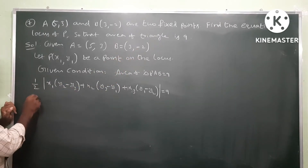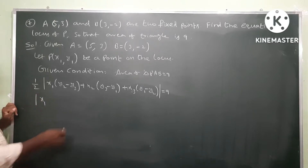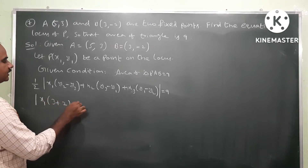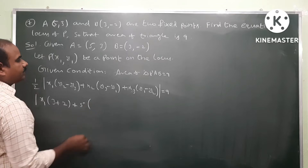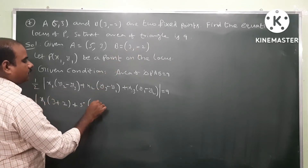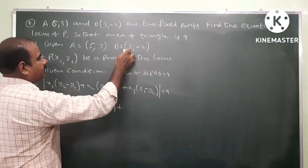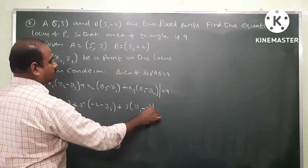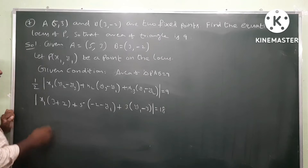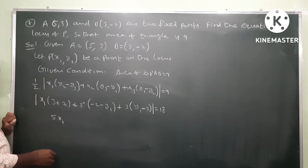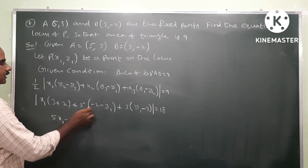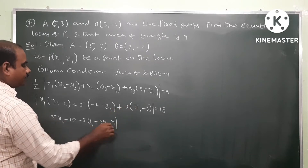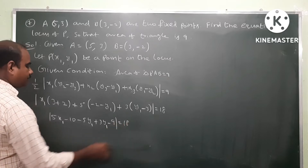Substituting: half times mod of x1(3 - (-2)) plus 5((-2) - y1) plus 3(y1 - 3) equals nine. Simplifying: x1(3 + 2) gives 5x1. Then 5(-2 - y1) gives -10 - 5y1. And 3(y1 - 3) gives 3y1 - 9. Combining terms: 5x1 - 5y1 + 3y1 - 2y1 - 10 - 9 under modulus equals 18.